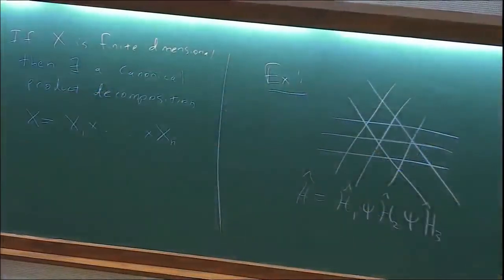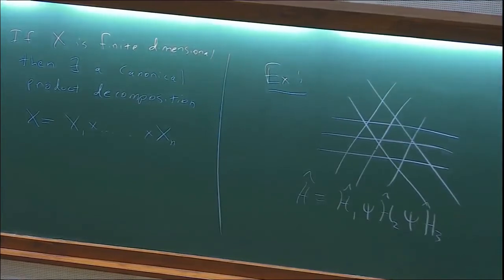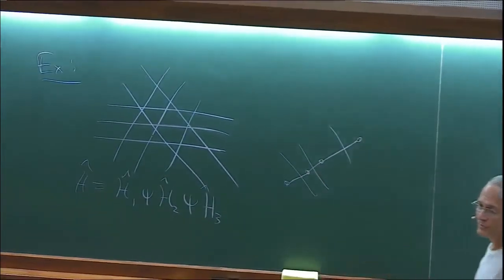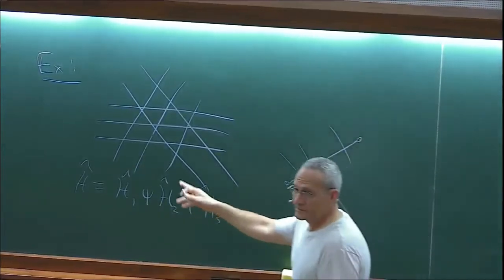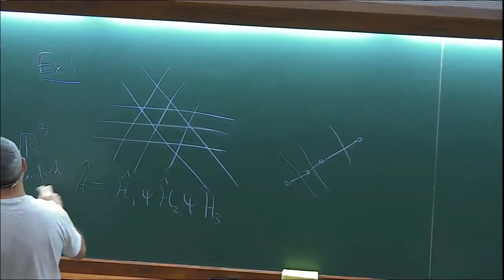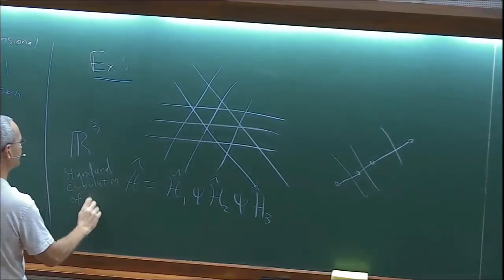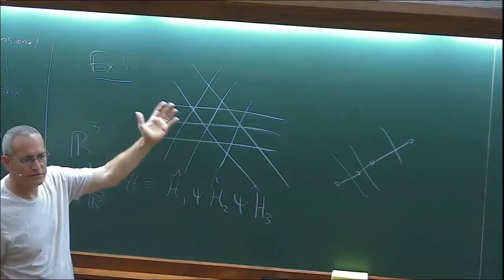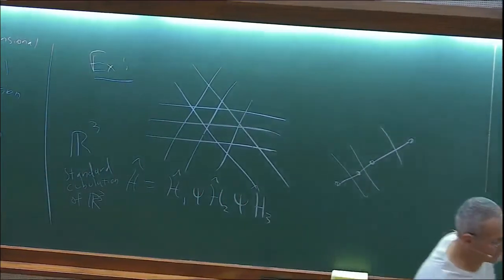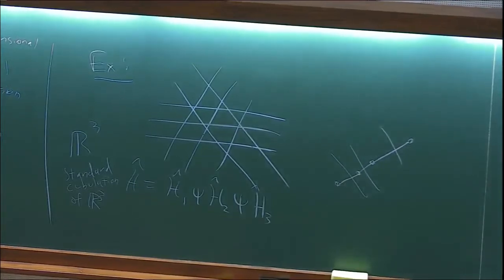The cube complex you get here is just R^3 — the standard cubulation of R^3. In this picture, you think of the cubulation of R^3 and a plane crossing all of the hyperplanes in it, and you'll see three families of lines. This phenomenon is interesting: if you had this situation and built a cube complex, and say Z-squared was acting co-compactly, you won't get a co-compact action on the cube complex in this case.